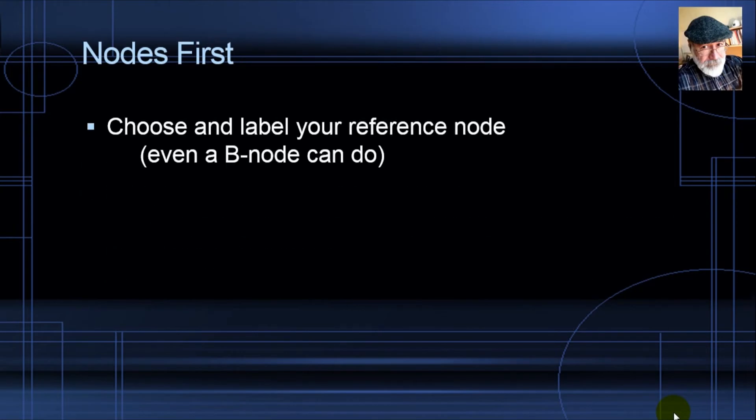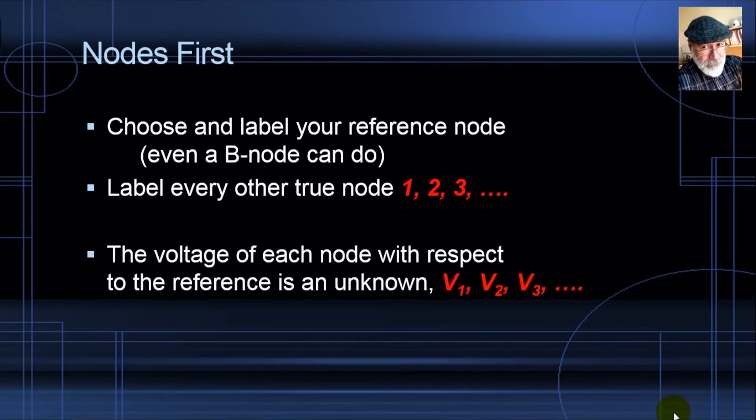We begin with the nodes. Choose and label your reference node. Even a binary node could be if you want to. Label every other true node 1, 2, 3, etc. The voltage in each one of those true nodes with respect to the reference is going to be an unknown V1, V2, V3.